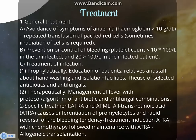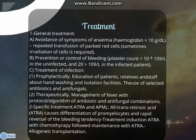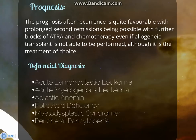Treatment of promyelocytic leukemia. There are two types of treatment: general treatment and specific treatment. General treatments include avoidance of anemia symptoms by giving repeated transfusion of packed red cells, prevention or control of bleeding, and treatment of infection — done prophylactically and therapeutically. For specific treatment, ATRA (all-trans retinoic acid) causes differentiation of promyelocytes and rapid reversal of the bleeding tendency. Prognosis after recurrence is quite favorable, with prolonged second remissions possible with further blocks of ATRA and chemotherapy, even if allogeneic transplant cannot be performed, although it remains the treatment of choice.